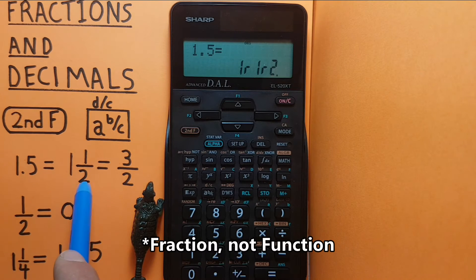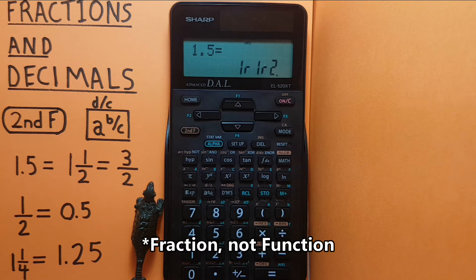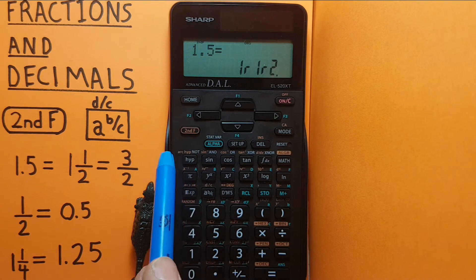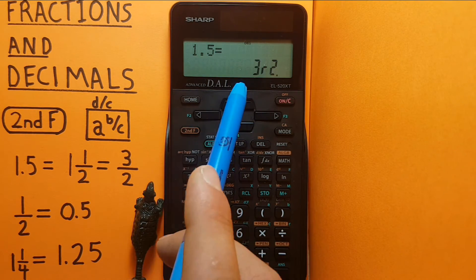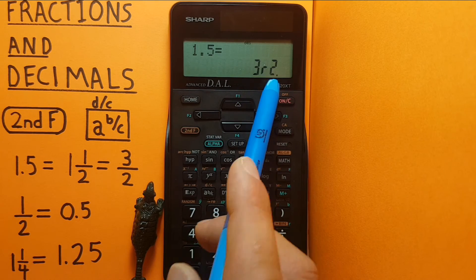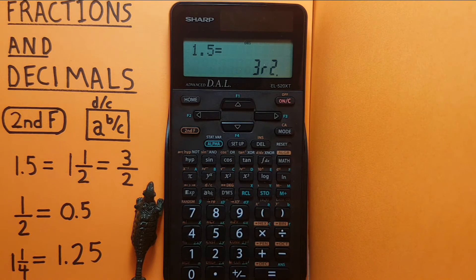So this is a proper fraction. What if we wanted an improper fraction? Well then we can use second function a b over c again to give us 3 over 2, which is the same thing.